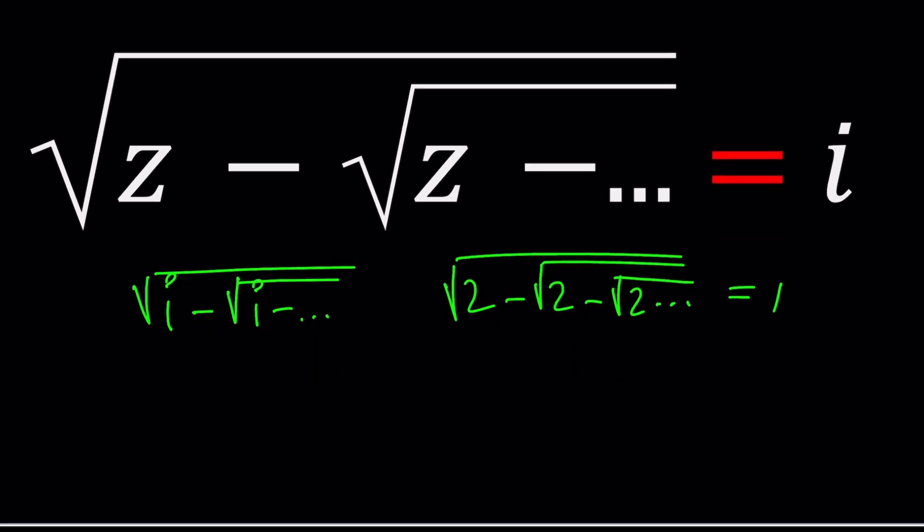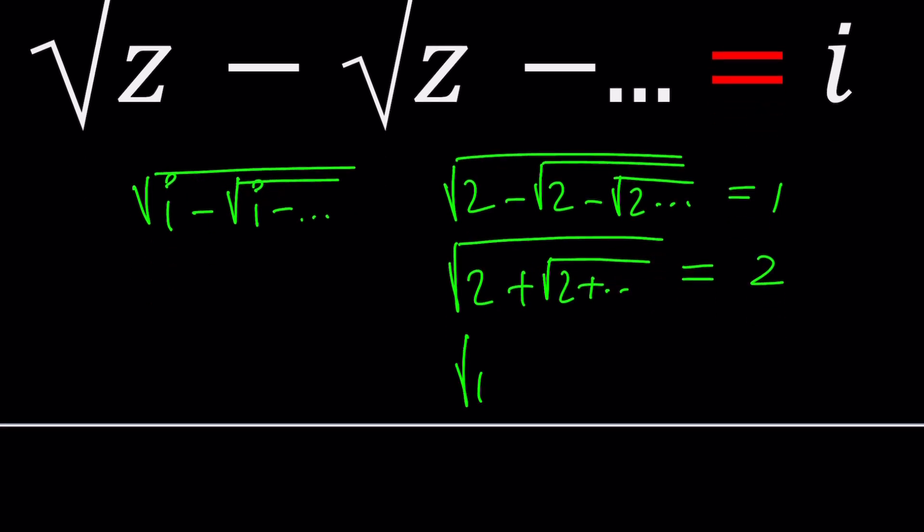Or how about this one? You should probably know that this is equal to 2. Or how about this one? You probably know that this is equal to golden ratio, right? Do you write it as phi or phi or something like that? One of the Greek letters.